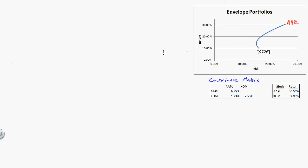So all I want to do is just draw that line. I have two things. The return for a portfolio is equal to, with two assets, the weight of Apple times the return on Apple plus the weight in Exxon times the return on Exxon.